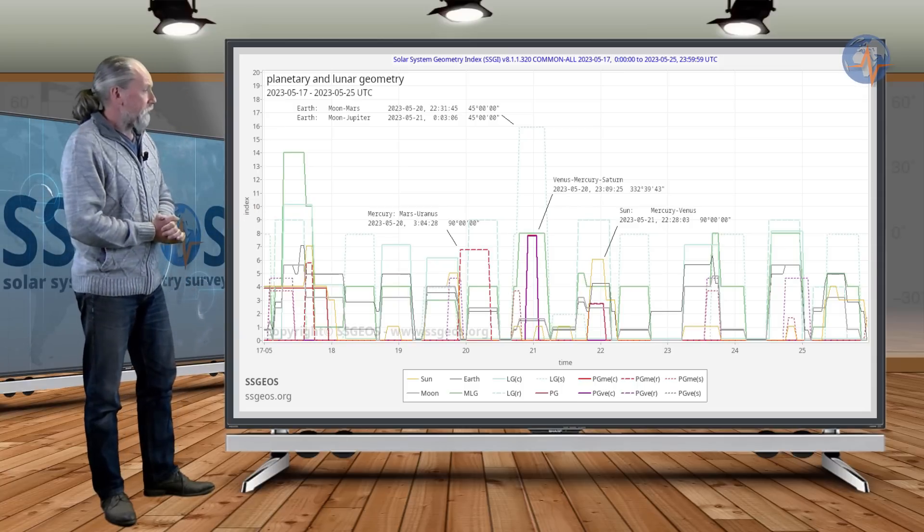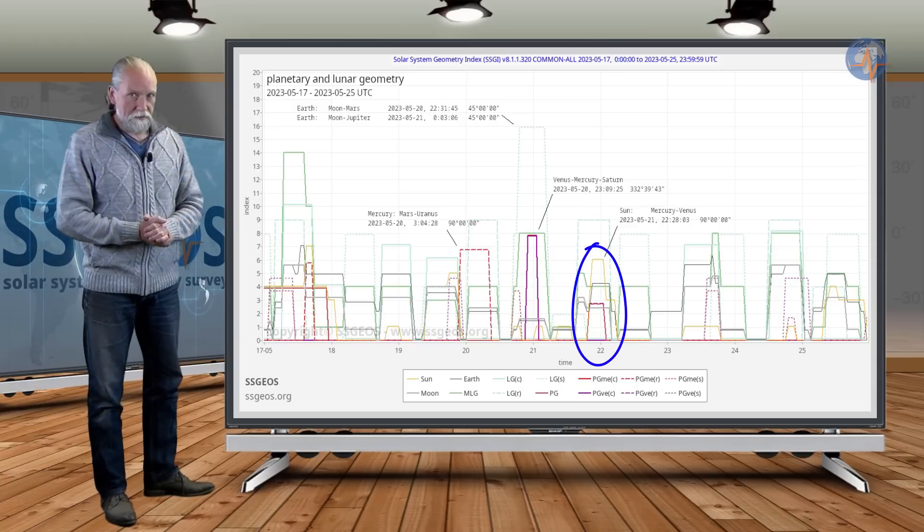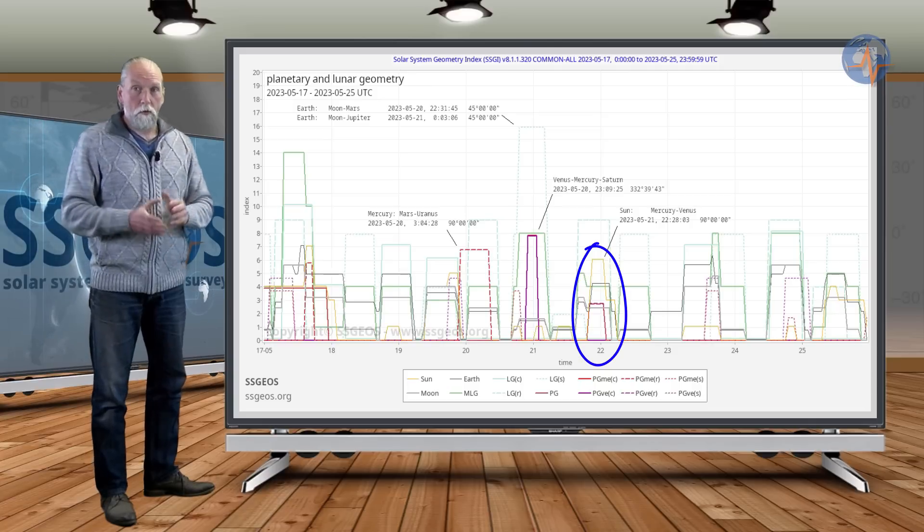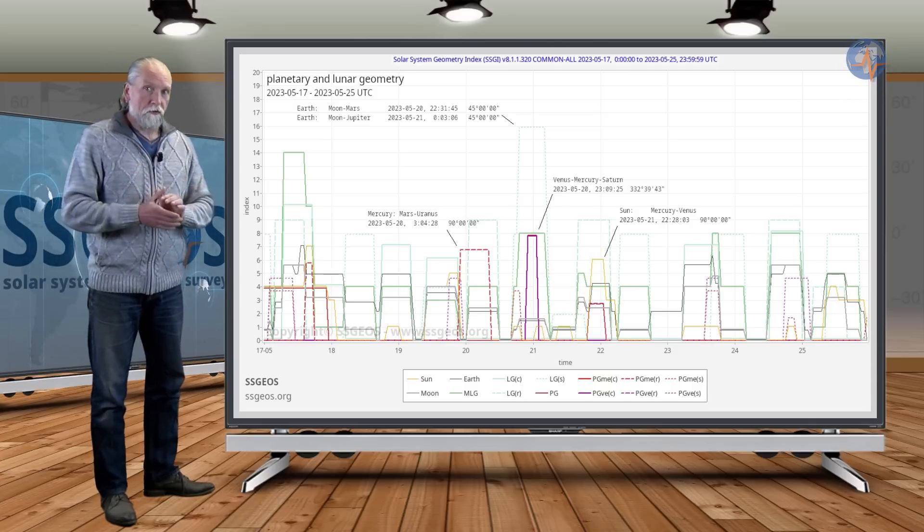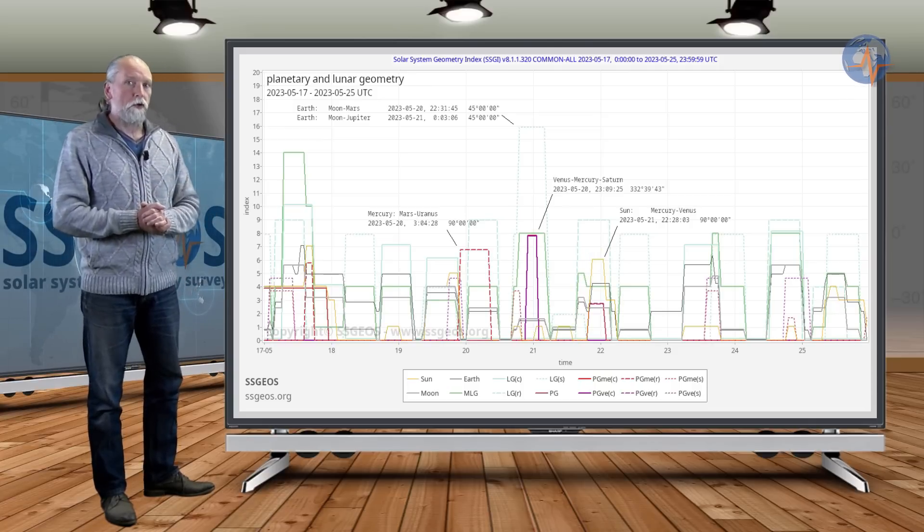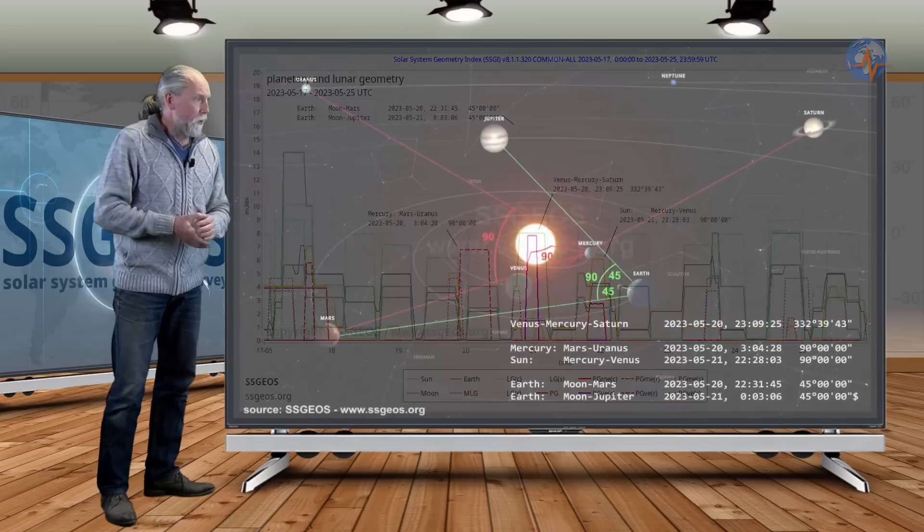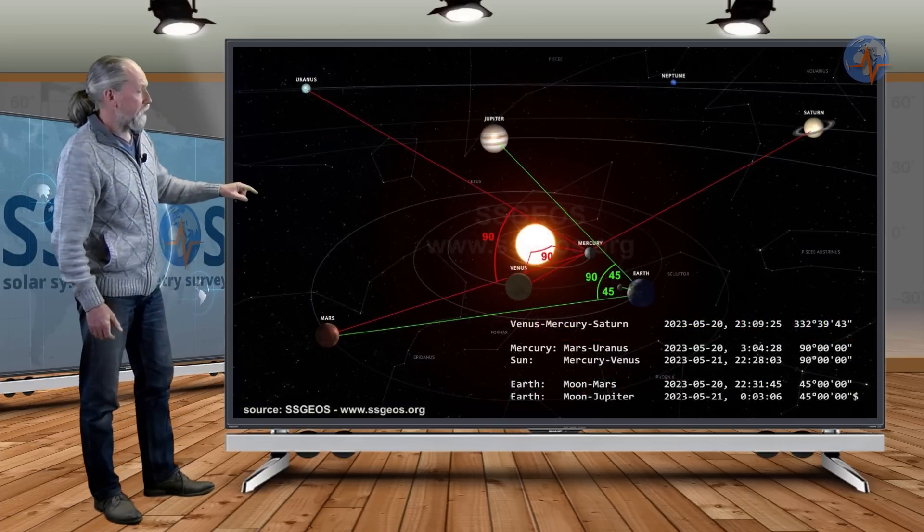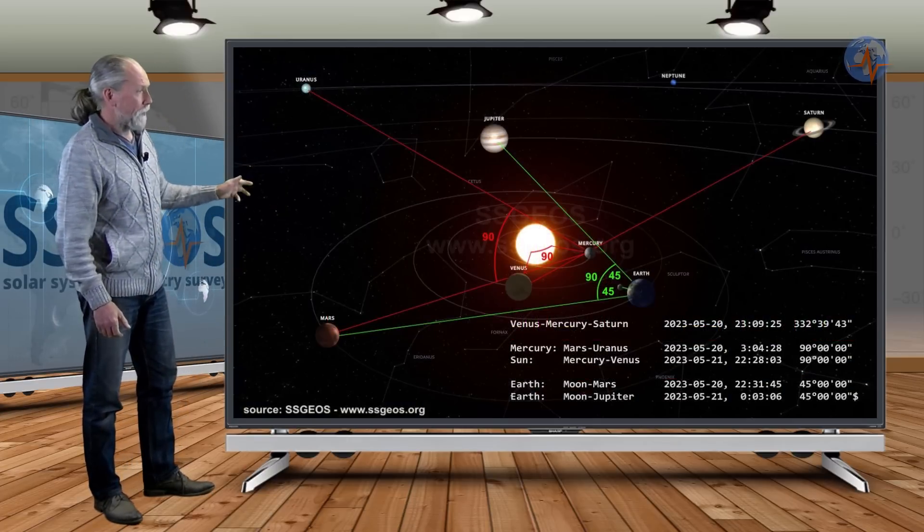That will be followed by another right angle, and that is Sun, Mercury, and Venus. So as you can see, we are going to have quite a convergence of critical planetary and lunar geometry on the 20th and the 21st. Then we also see in the solar system this planetary geometry depicted. The right angles and the green angles show the geometry involving the Moon.